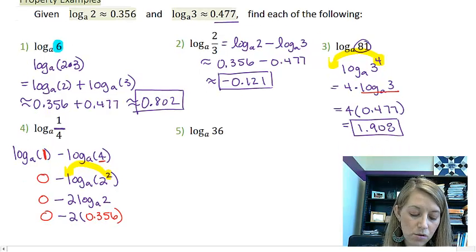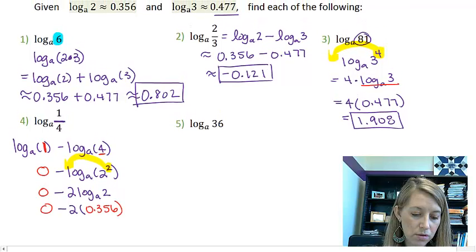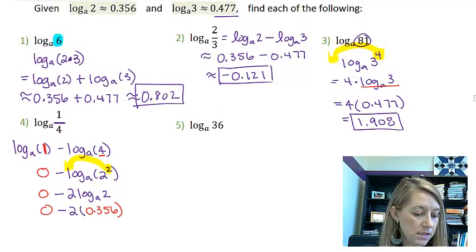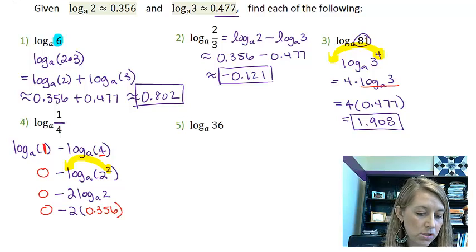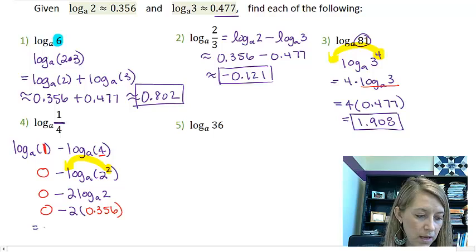Okay, so then all I need to do is take 0 minus 2 times 0.356. And so my answer is going to be negative 0.712.